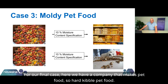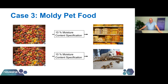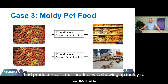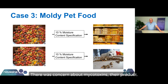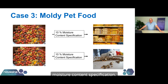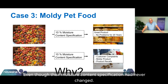For our final case, we have a company that makes hard kibble pet food. They've been releasing their product on a 10% moisture content specification, been doing it for 20 years, never had a problem, and their product was well-liked and well-received. Then all of a sudden, out of nowhere, they had product recalls. Product was showing up moldy to consumers, there was concern about mycotoxins, and they had to recall millions and millions of dollars of product that had gone moldy — yet there had been no change in their moisture content specification. Our root cause analysis: why is the product molding at the current moisture when no problems were had previously? Through investigation, we found they had actually changed their moisture content method from one to another, but kept the same moisture content specification.